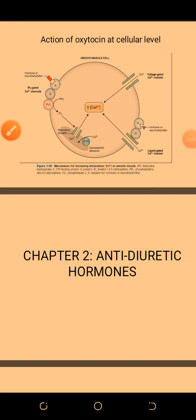That concludes our discussion about oxytocin. There are some pathophysiological conditions associated with oxytocin, but we will discuss them in pathology. Insufficient secretion of oxytocin is associated with lack of sleep, lack of libido, and there will be no milk production if there is insufficient oxytocin.